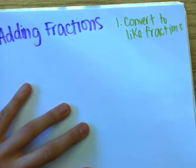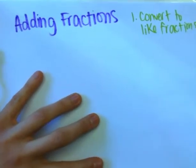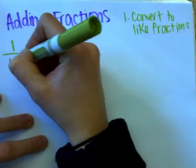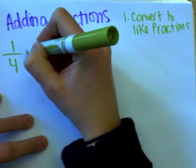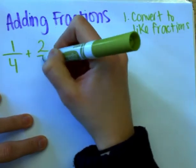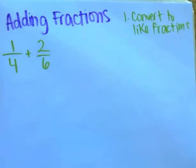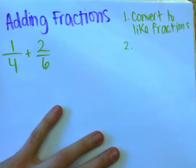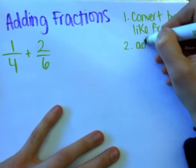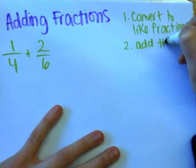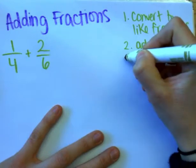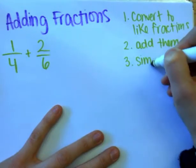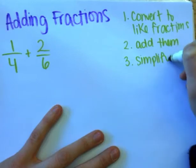For the first problem we are going to solve, we're going to notice that we have two unlike denominators — fourths and sixths — and those are not the same. So we're going to first start by converting them to like fractions. After that we're going to add them, and then our last step is going to be to simplify if we can.